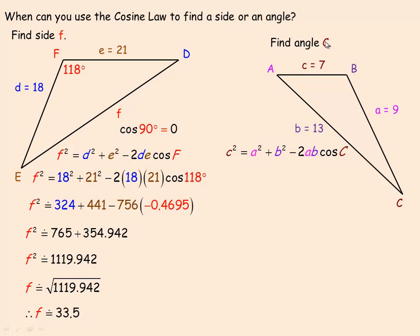You can use the cosine law instead. To find angle C, write out the cosine law for side C — using the version that has cosine of angle C in it. In this formula, side C is 7, side A is 9, side B is 13. You know everything except angle C, so you can find it. Filling in: C² = A² + B² − 2AB cos C becomes 7² = 9² + 13² − 2(9)(13) cos C.